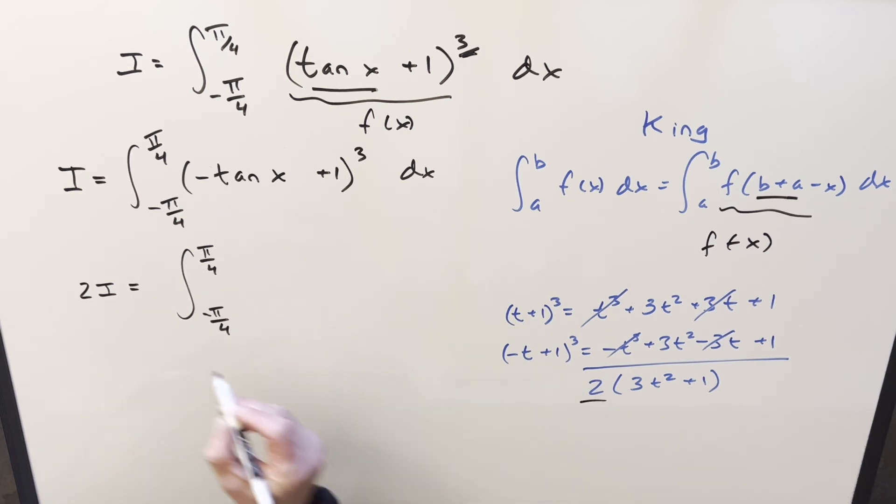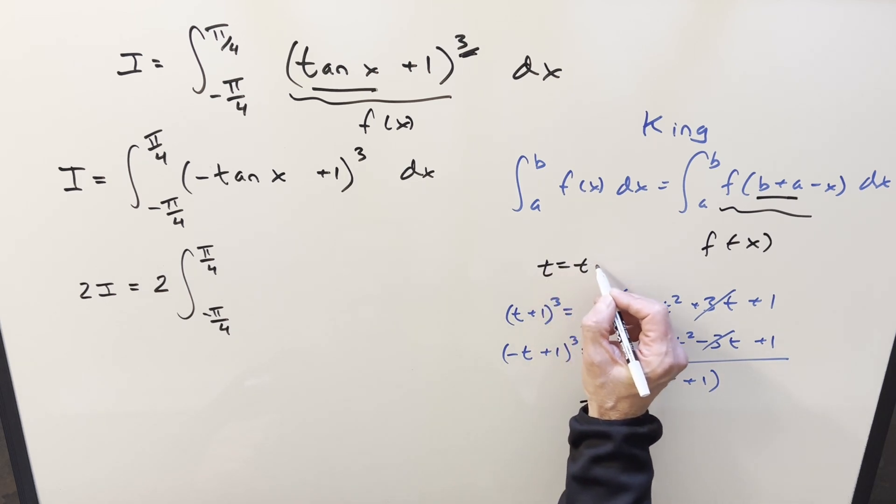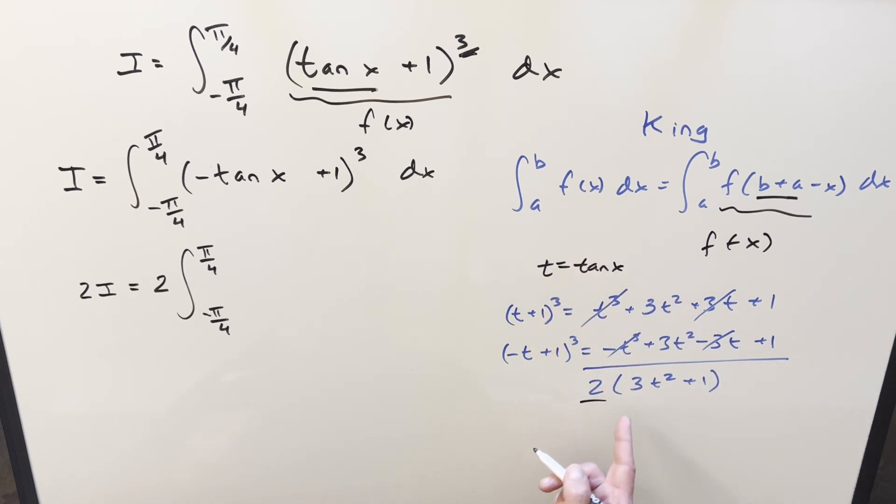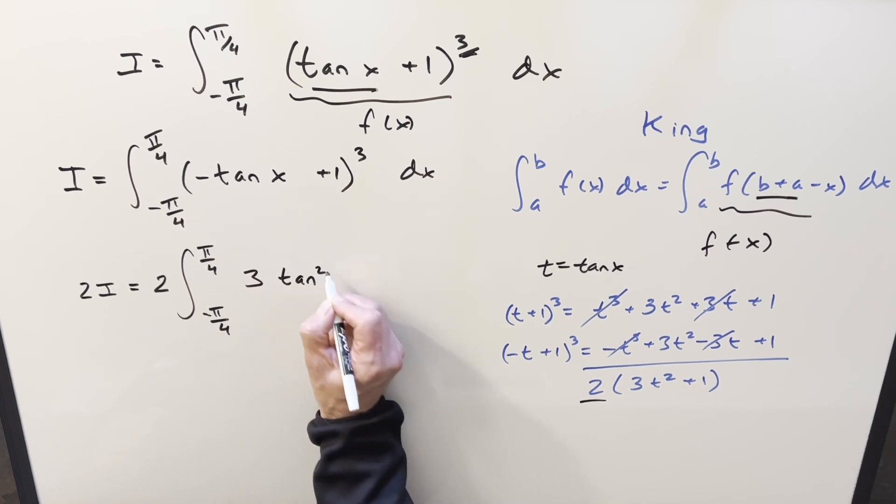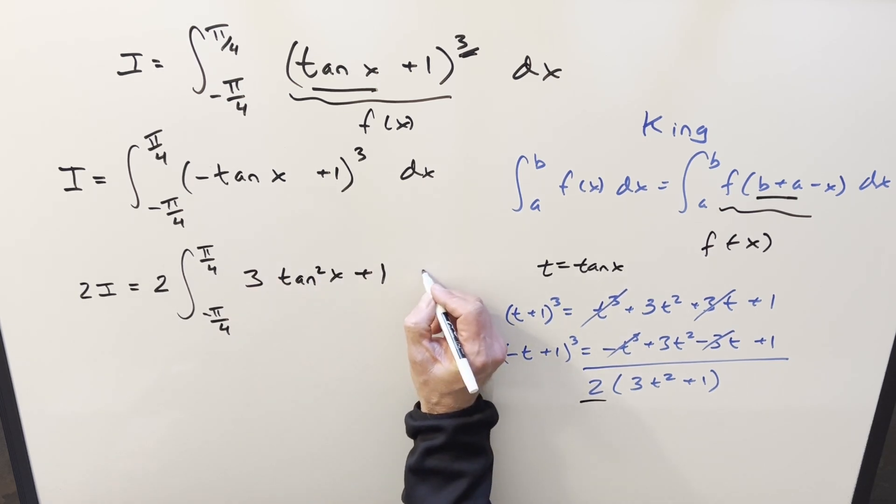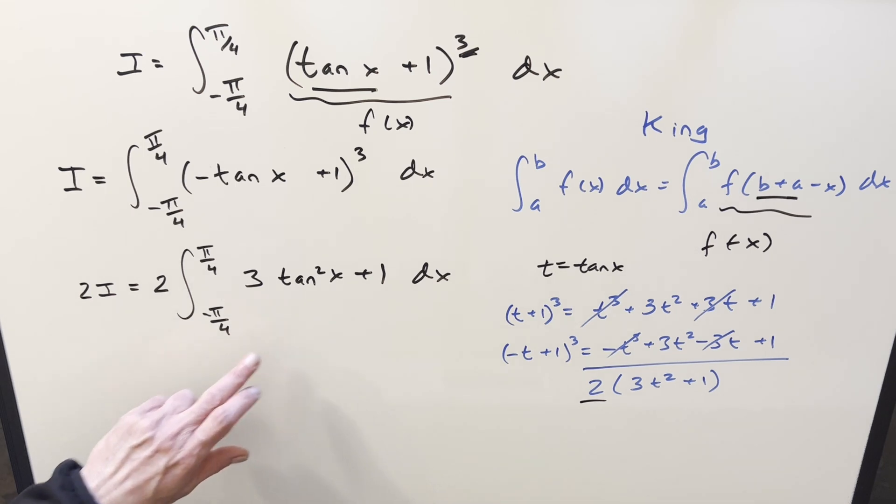The 2 we'll just bring up front as a constant here. Again, t we're just setting equal to tan of x here. So we'll plug back in tan of x. This is going to become 3 tan squared x plus 1 dx. But now this integral is not too bad. We can probably finish this off pretty quick.